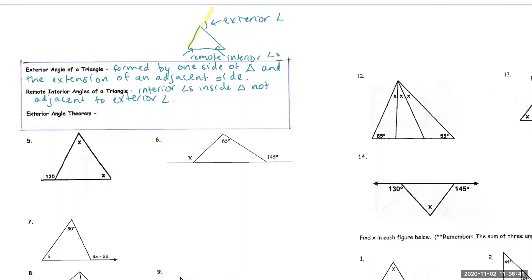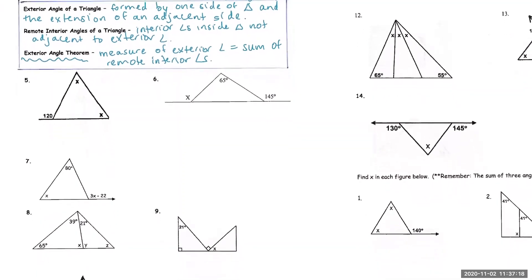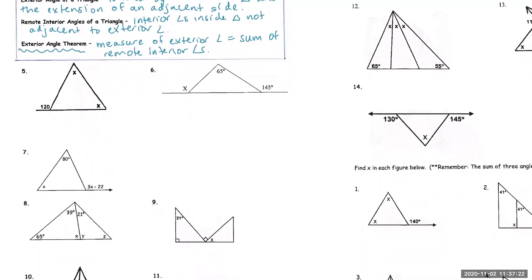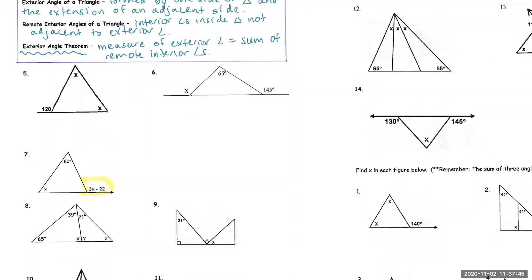We needed those two definitions to define the exterior angle theorem. I'll show you guys conceptually why this is true. We're going to define the theorem to say that the measure of the exterior angle is equal to the sum of the two remote interior angles. We're not going to do the first two problems because I think those are easy — some of these I'm saving for your homework. So number seven: you see that this angle here is formed by one side and the extension of another side. How would you describe 3x minus 22 in terms of the definition above? It's the exterior angle.